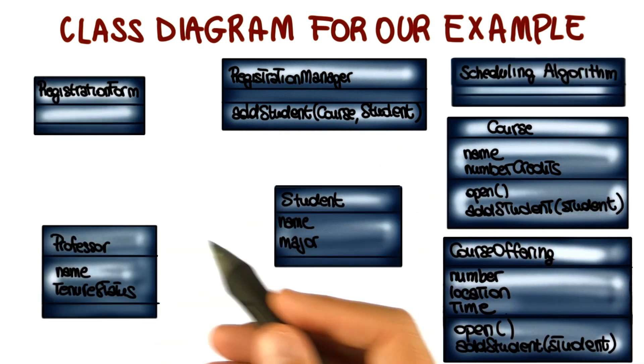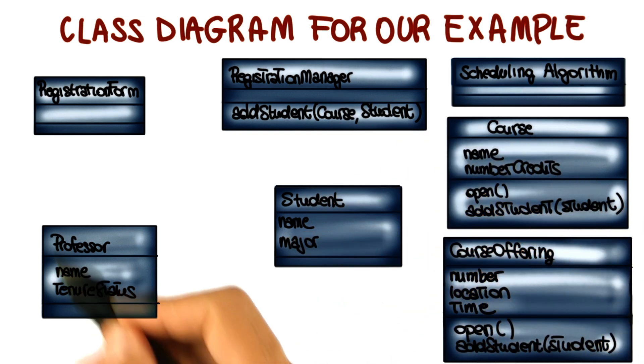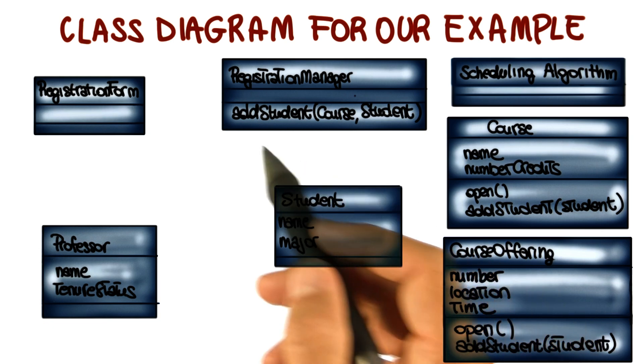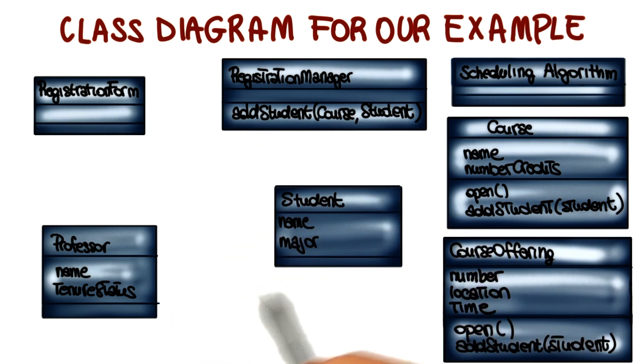So after doing that, we will continue and populate in a similar way the other classes in the system. So let me recap. Now we saw how to identify classes, how to identify members of the classes, in particular attributes and operations.